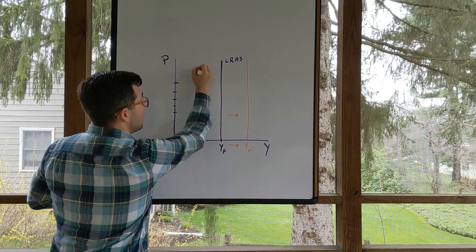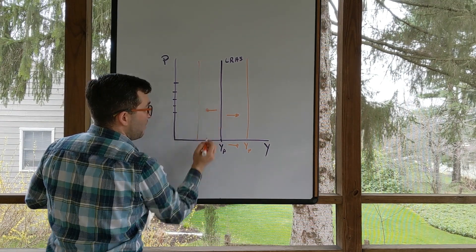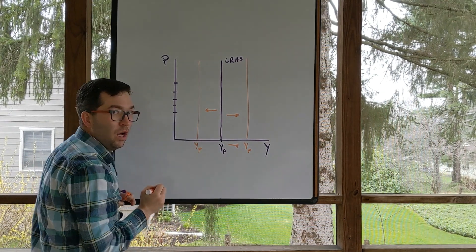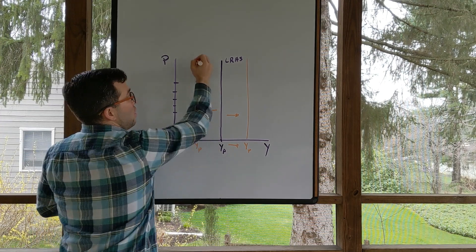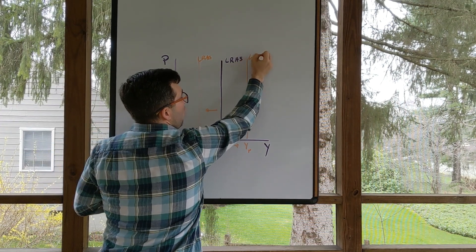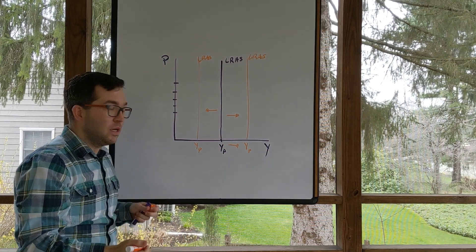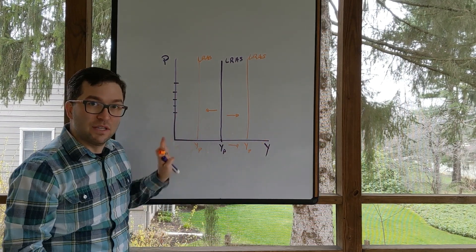Or you could see a decrease, which would be a shift to the left, where we'd see a lower level of potential GDP. So all three of these are representing three different long run aggregate supply curves. Shifting to the right, shifting to the left.